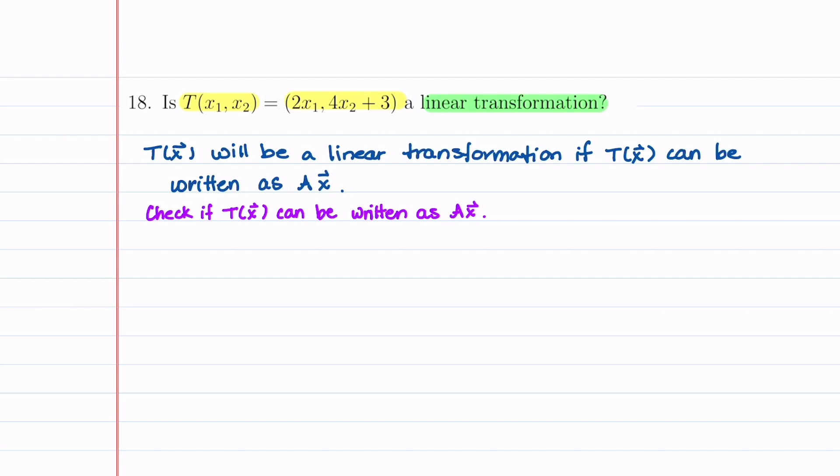Let's start by understanding what a linear transformation is. T of x will be a linear transformation if T of x can be written as a matrix A times a vector x. So what we're going to do to solve this problem is check if T of x can be written as A times x.